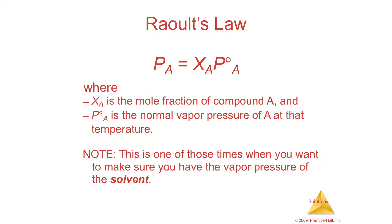The cool thing about this is it's based on how much you add. The more you add, the less vapor will be above that material. Raoult's Law gives the relationship. The vapor pressure of A is based upon the normal vapor pressure with nothing added — that's your P-naught of A. Then X of A is the mole fraction of it. So if your mixture is 90% solvent and 10% additive, you're only going to get 90% of the vapor pressure you would normally have. If you have 80% solvent — which means 20% solute — you're only going to have 80%. The more stuff you add, the lower the vapor pressure will be.